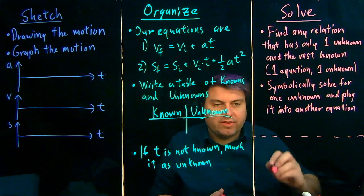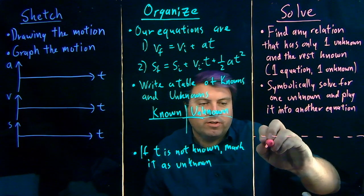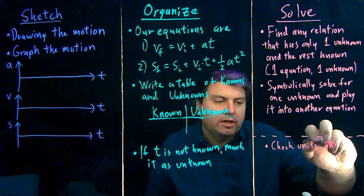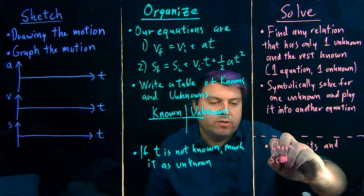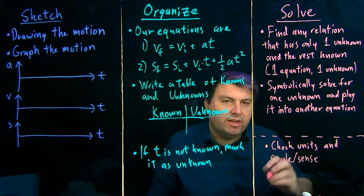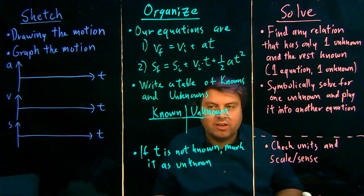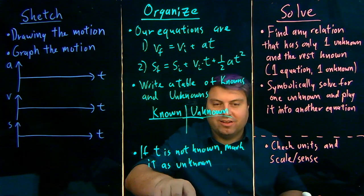Once we've come to a solution, we want to check our units and we want to check our answer. We usually check our answer by the scale of the answer, the sense of the answer. So that's how we begin to solve one-dimensional kinematic equations.